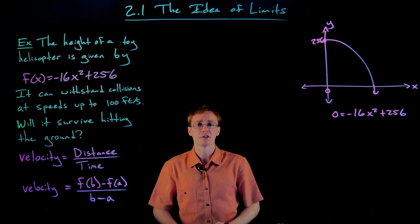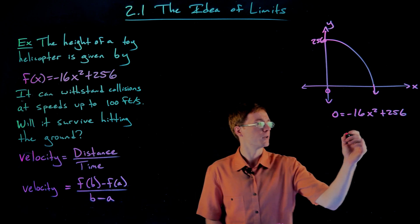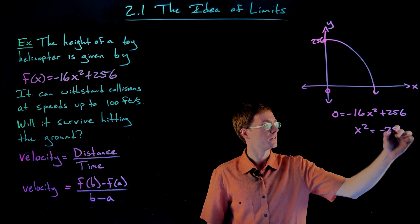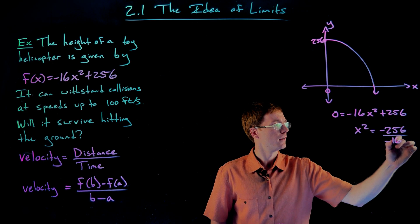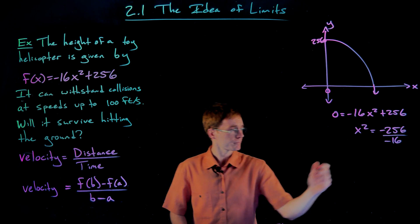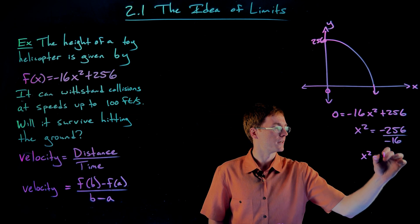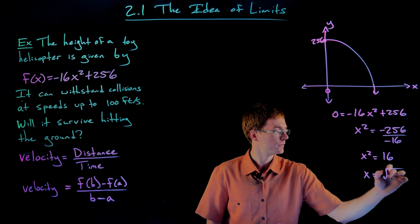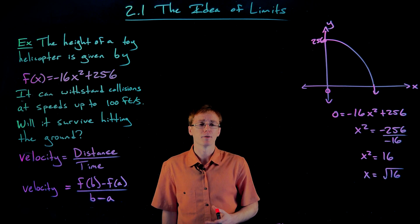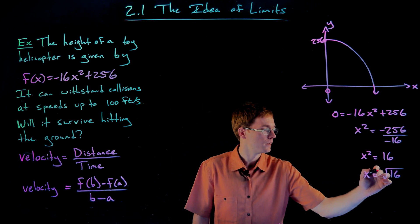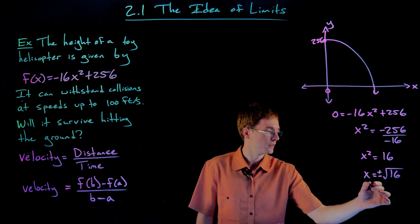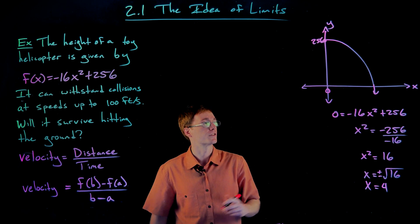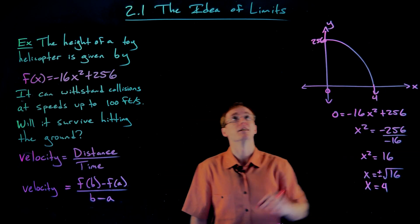We don't need the quadratic formula — we just move things around. First, isolate x squared by subtracting 256 from each side and then dividing both sides by negative 16. This gives x squared equals 16. Taking the square root of each side gives plus or minus 4, but given the context of our problem, we're only looking at the first quadrant, so we take the positive solution: x equals four.